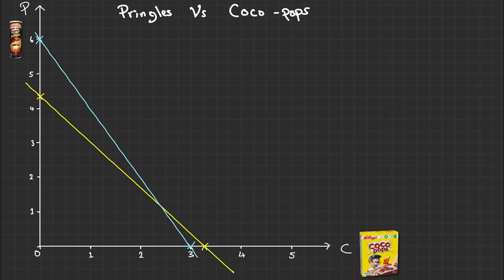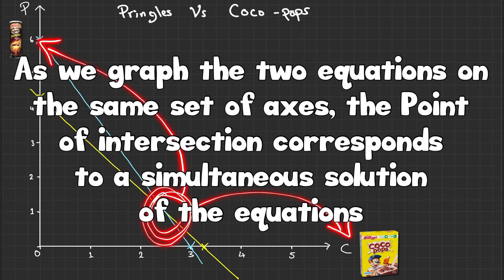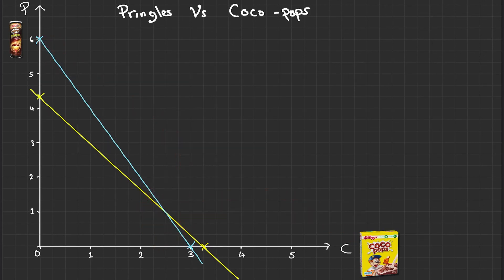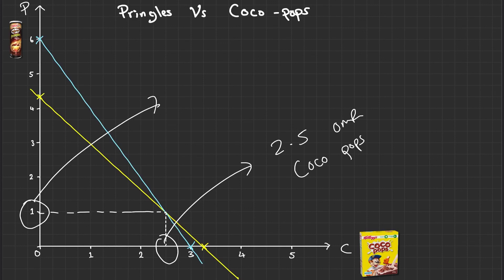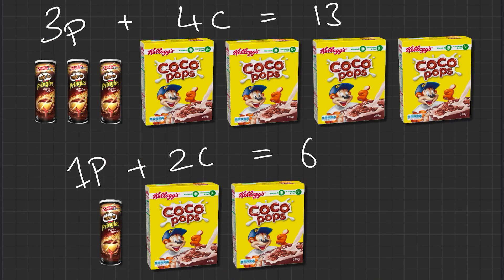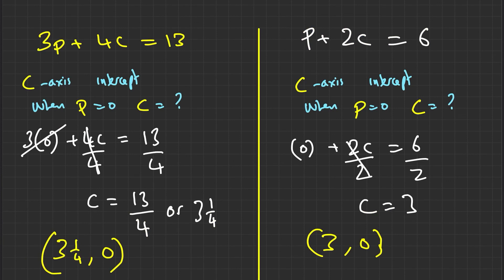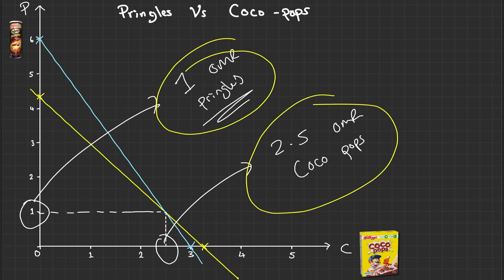So where the graphs intersect will give us the solution for how much a Cocoa Pops and the Pringles pack costs. So let's have a look at this then. We'll go up to the line of intersection and then we'll go across to see how much the value is. So at this point, we have 2.5 or two and a half Rials for a pack of Cocoa Pops. And over here, we have one or one Rial for a pack of Pringles. So once we set up a system of equations and we've worked out the x and y intercept or any two points on that graph, and then we plot that graph, we can find the point of intersection to be the solution for x and y, or in this case, for the Cocoa Pops and the Pringles pack.